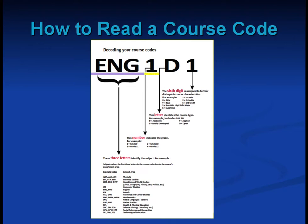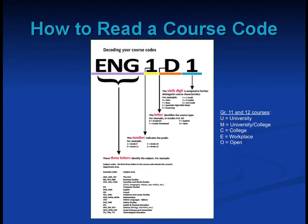The number indicates the grade. Typically, you will be choosing the number 4 for grade 12 courses. The letter identifies the course type. Grade 12 courses are either U (University), M (University or College), C (College), E (Workplace), or O (Open). The sixth digit is assigned to distinguish course characteristics — for example, 1 is a 1-credit course and 2 is a 2-credit course, such as cooperative education.